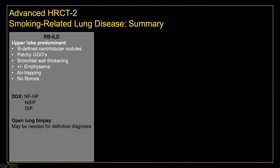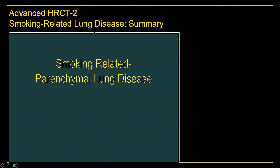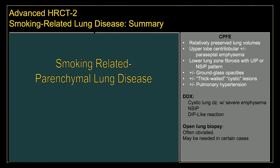RB-ILD shows an upper-lobe predominant pattern of ill-defined centrilobular nodules — looks a lot like HP. Look for patchy bilateral ill-defined ground-glass opacities and bronchial wall thickening. DIP is more lower-lobe predominant with juxtapleural patchy ground-glass opacities, reticular opacities, and mosaic attenuation. Look for small cystic lesions intermingling with the ground-glass opacities. Remember, these are now falling under the umbrella term of smoking-related parenchymal lung disease. And lastly, combined pulmonary fibrosis and emphysema syndrome is more commonly seen in males in the sixth and seventh decade of life. Lung volumes are relatively preserved because of a tug-of-war between upper-lobe emphysema and lower-lobe fibrotic changes. Look for ill-defined thick-walled cystic lesions in the lower lobes, and don't forget to look at and report the main pulmonary artery diameter.